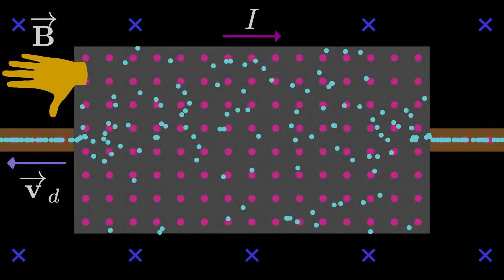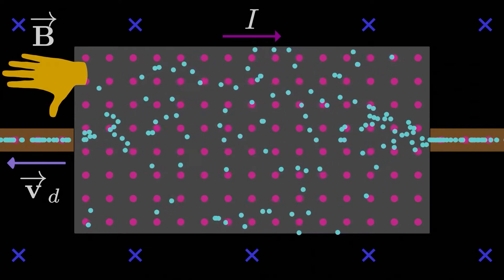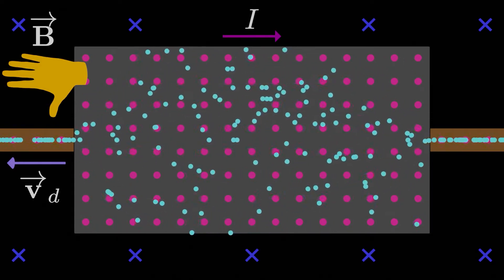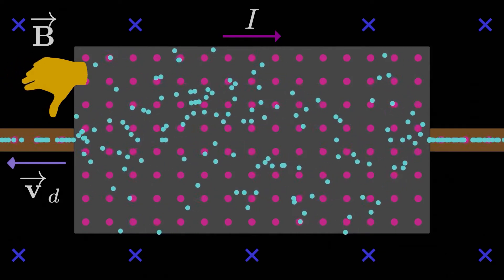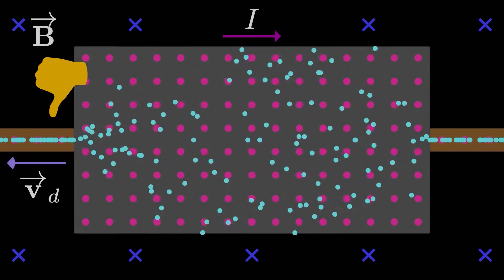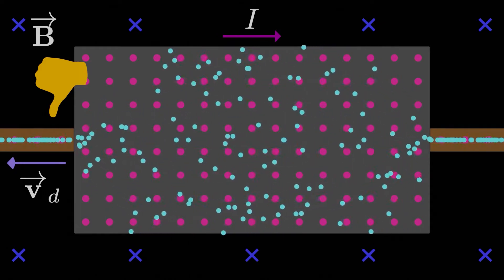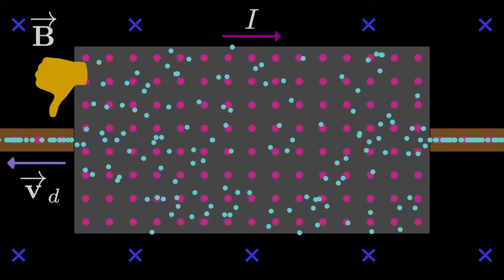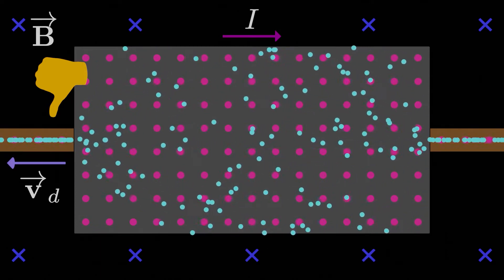As always, the right-hand rule will let us know. Taking our right hand and pointing our fingers in the direction of the electron movement, and then curling them in the direction of the magnetic field, which is into the screen, the magnetic force on a positive moving charge would be downwards. Since electrons are negatively charged though, the magnetic force is actually upwards on them.